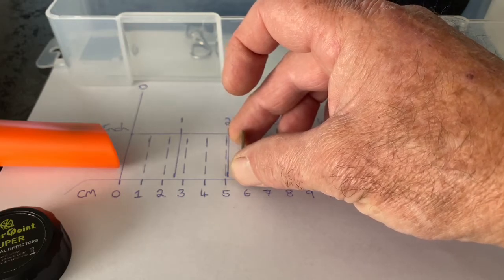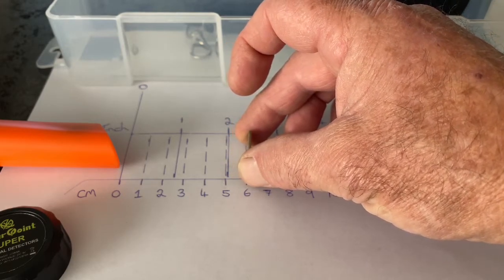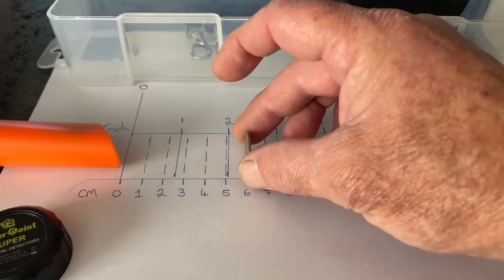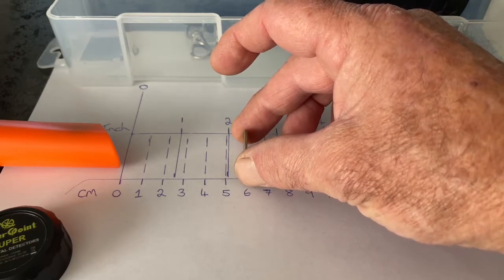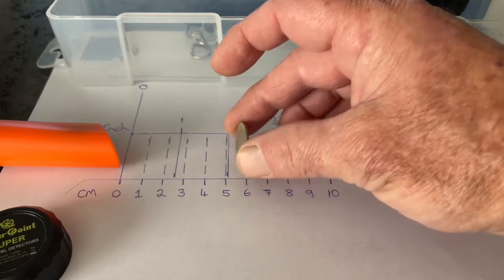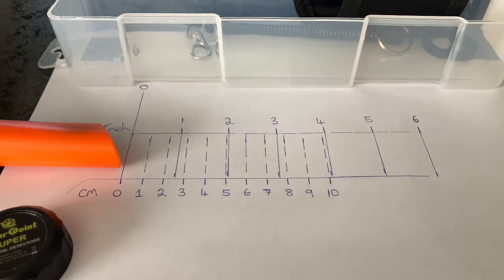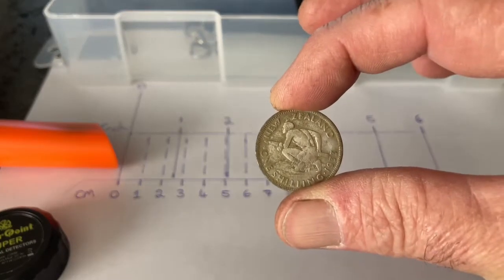Okay, so that's not too good. All right, so that's around about six centimeters or two and a quarter inches for a sixpence. It's pretty good. Next up we've got a New Zealand silver shilling, a bigger coin.